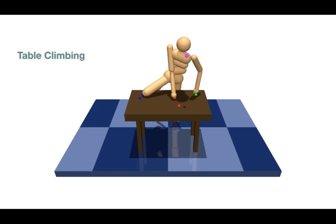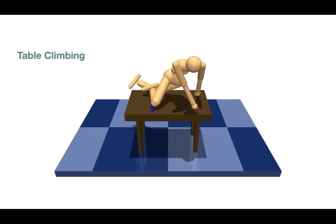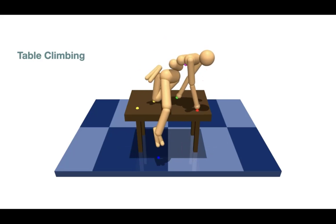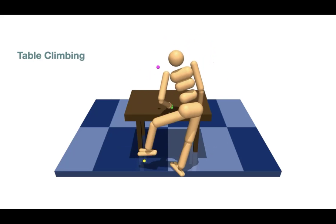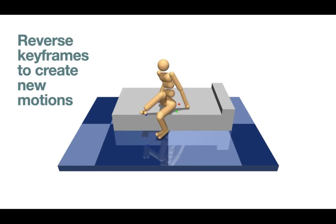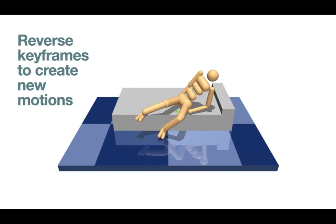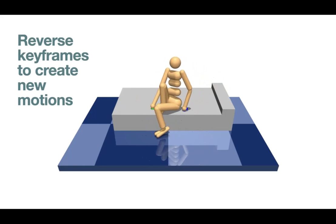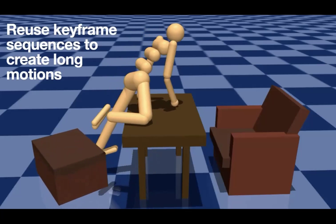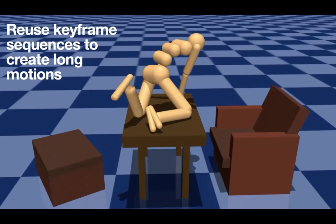Our method is able to solve problems which require whole body coordination, like climbing a table. With minimal modifications, reversing the existing keyframe sequence of lying down can generate another physically plausible and natural-looking motion for getting up. Contact keyframes offer a flexible approach for creating longer motions.